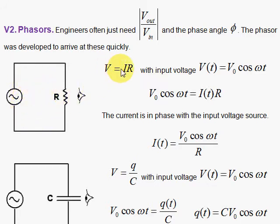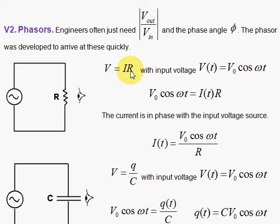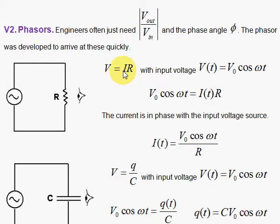Here we have Ohm's Law: V equals IR. This applies to both alternating current and direct current. For direct current, you could replace the generator with a 9-volt battery or a 1.5-volt D-cell. The current flows in one direction. Think of resistance as controlling the amount of current — if resistance is very high for a given 9-volt battery, then I has to be small so that I times R stays equal to 9 volts. The greater the resistance, the smaller the current.